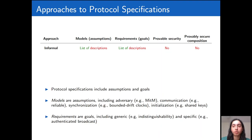So we have adversary models like man-in-the-middle, communication models like reliable communication, synchronization models like boundary-driven clocks, initialization models like shared keys, and so on. And we use requirements to refer to the goals. We can have generic requirements which can apply to multiple protocols, like indistinguishability, and we can have more specific requirements, like authenticated broadcast for a broadcasting protocol.